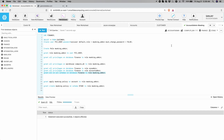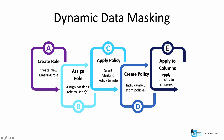Let's take a quick look at our slide to see which of the steps we have covered. We created a masking admin role, assigned the role to piauser, and applied the masking policy to the role. Now we need to create the policy and then apply it onto the column. The last two steps have to be completed by the masking policy administrator — in our case, piauser. Let's log in as piauser to complete the last two steps.